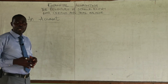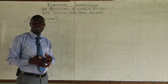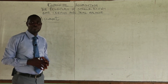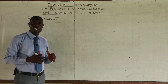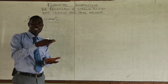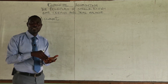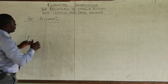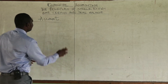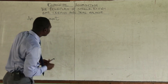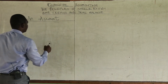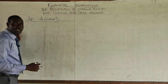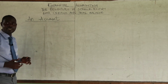An account has been defined as the summary of all transactions relating to the same activity. When you open a ledger, a page of the ledger is divided into two halves — the left hand side and the right hand side.